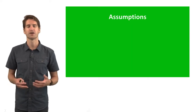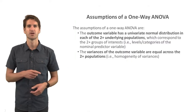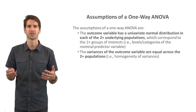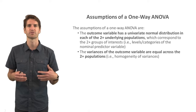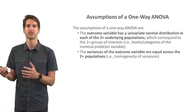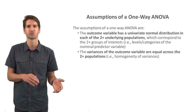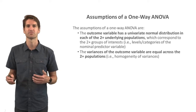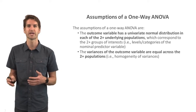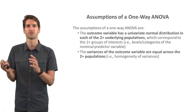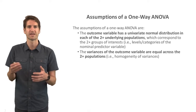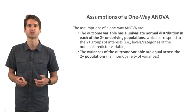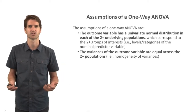What are the statistical assumptions underlying a one-way analysis of variance? The first assumption is that the outcome variable has a univariate normal distribution in each of the two or more underlying populations, which correspond to the two or more groups of interest. The second assumption is that the variances of the outcome variable are equal across those populations — this is known as the homogeneity of variance assumption.